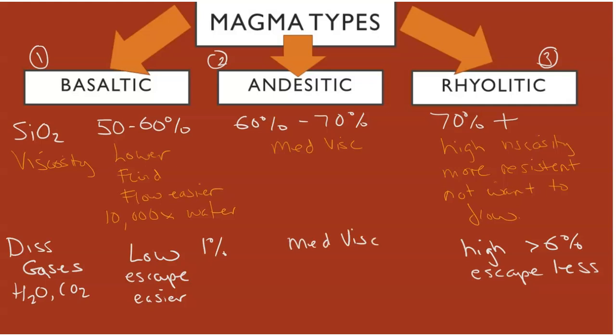Andesitic will be that medium viscosity and medium gas level. Andesitic magma is formed by the combination of basaltic and rhyolitic. In terms of explosivity, the dissolved gases really hold the key to whether this magma is going to erupt through a volcano. The amount of energy put through the volcano in a large eruption will be dictated by the gases.